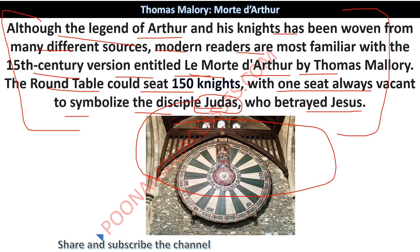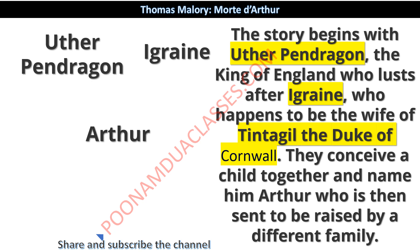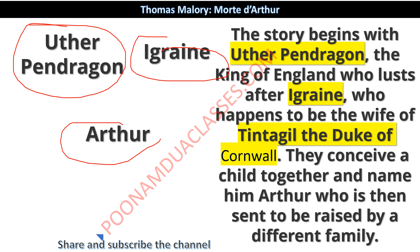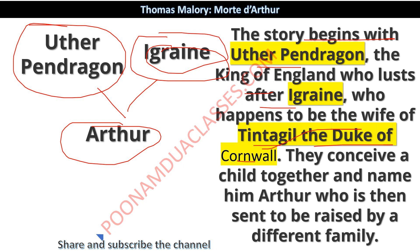When you understand the story, you will slowly understand the whole introduction. Now let us understand the story in a little detail. There is a king, Arthur Pendragon, Igraine, and Arthur — our story's hero. The story begins with Arthur Pendragon, the King of England, who used to lust after Igraine. Igraine was the wife of Tintagel, and Tintagel was the Duke of Cornwall. Arthur Pendragon lusts after Igraine, and both of them conceive a child together under some circumstances.